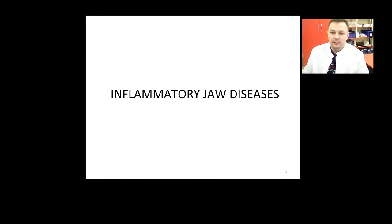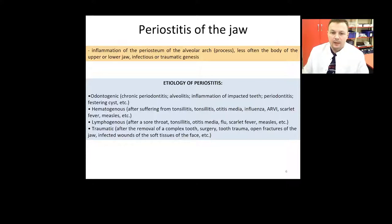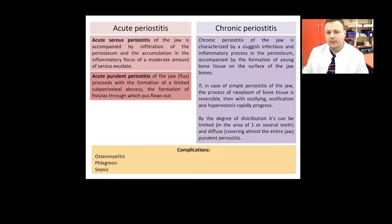A feature of the jaw bones in comparison with other bones is the presence of teeth, damage to which is a cause of contact spread of infection. The most common cause of inflammatory lesions of the jaws is inflammation of the periosteum of the alveolar arc or processes, less often the body of the upper or lower jaw. Etiology of periostitis may be odontogenic, hematogenous, lymphogenous, or traumatic.